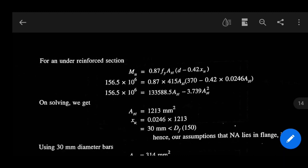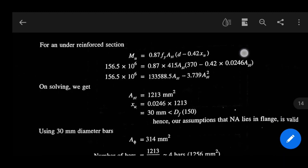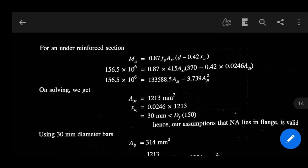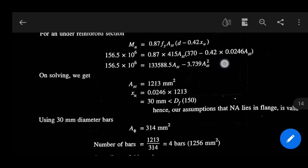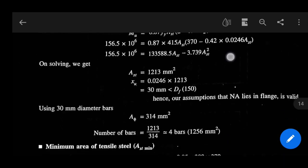So XU equals 0.0246 into 1213, that equals 30 mm, which is obviously less than 150 mm. Hence our assumption that neutral axis lies in flange is valid. Okay, so we have to solve the rest part of problem for this condition. Now using 30 mm diameter bars.